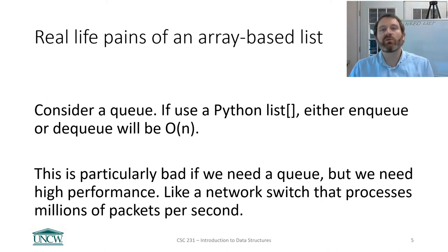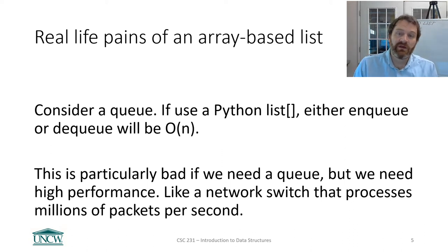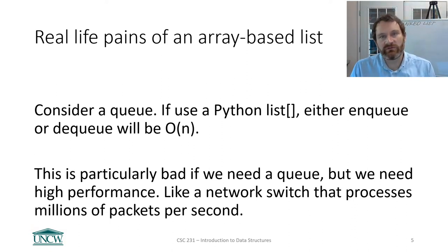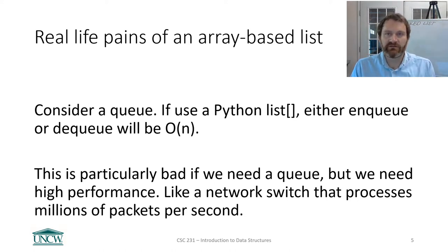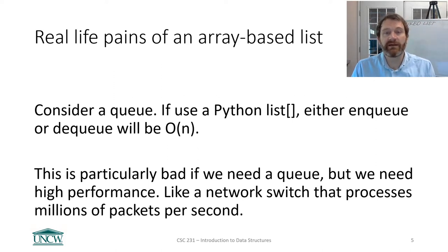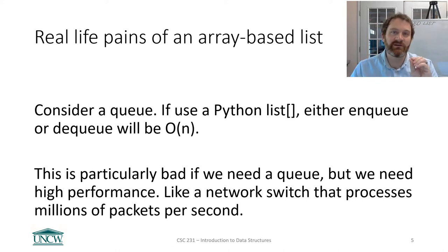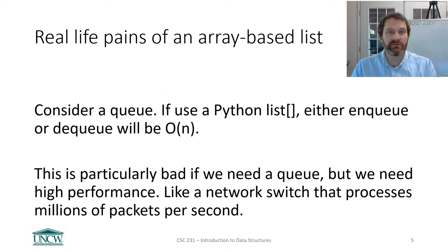Why would you go through the hassle of writing your own list data structure when you can just use Python's array-based list? Well, the array-based list, while very powerful, also has some downsides. Remember when we talked about queues? If you use a Python or any array-based list as the data structure for a queue, it must be the case that either the enqueue or dequeue operation will be O(n). This is because adding or removing things from the front of an array-based list means everything after it needs to shift to maintain that contiguous block of memory.